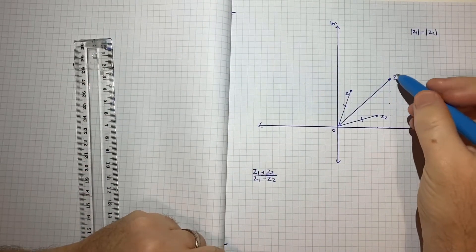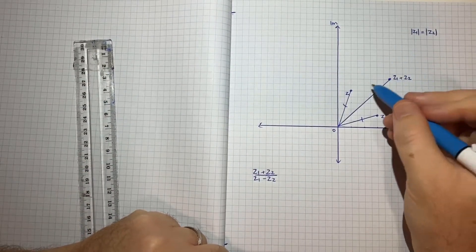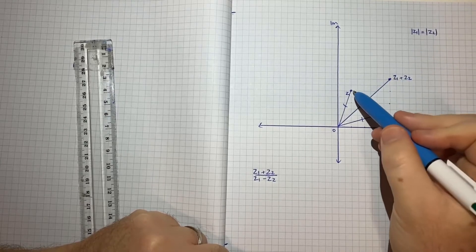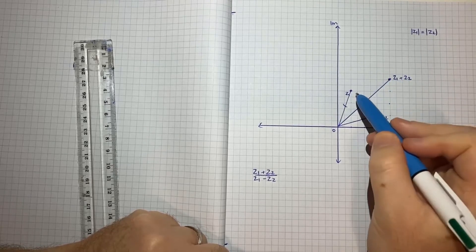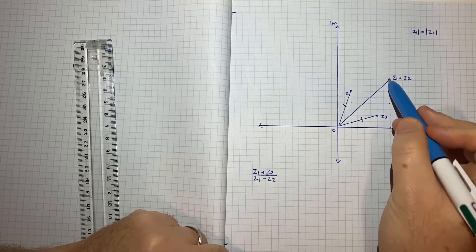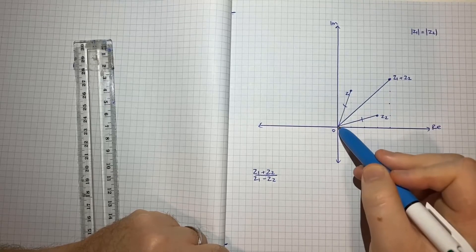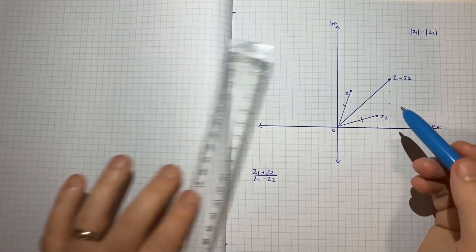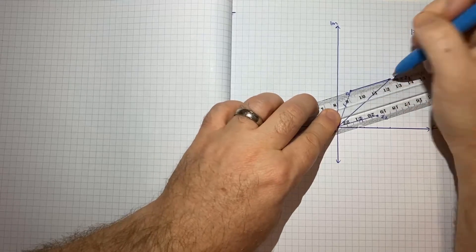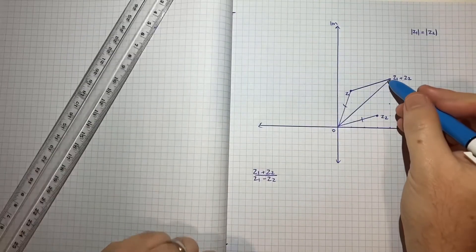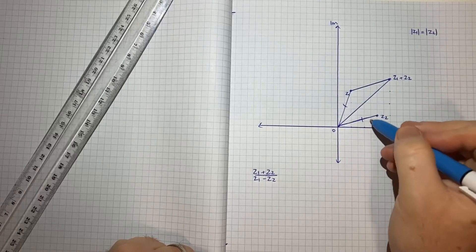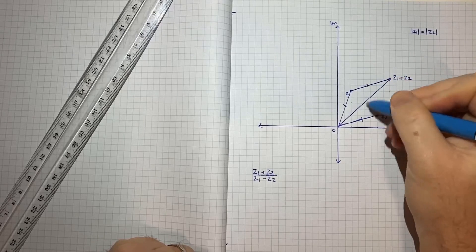Now what we can also do is think about what these lines here represent, because this line going from z1 to z1 plus z2 essentially involves moving over 2, 4, 6 and moving up 1. And that's exactly what I did here: 2, 4, 6 and up 1. So I can conclude that this vector here, if we think about the complex numbers as vectors, is the same as this vector here. It's just starting from a different point. So I can conclude that that's going to have the same length.